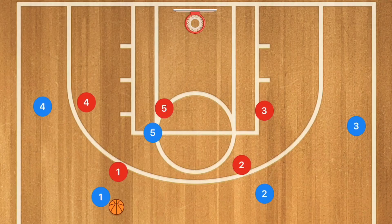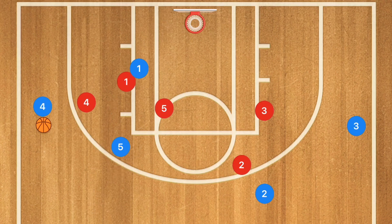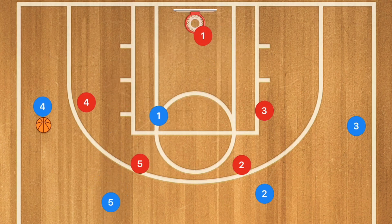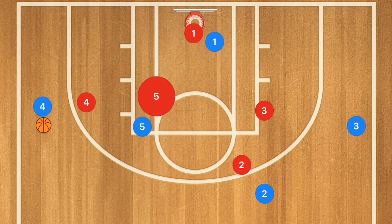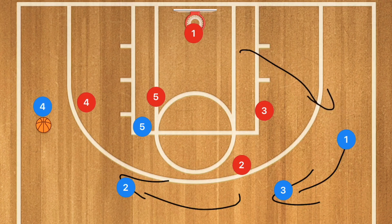For the four out one in against man-to-man, a simple play has player one pass to player four, then player five sets a back screen for player one who cuts towards the basket for a potential easy layup. If player one isn't open, player five can pop out, and player one moves towards the high post — or player one fills out towards player three and everyone fills in their spots, similar to the five out offense.